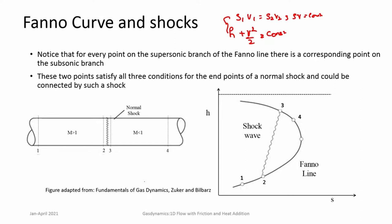You can also understand this by the fact that there are two branches in a Fanno curve. The subsonic branch (M < 1) and the corresponding supersonic branch (M > 1). One can always find two points — say points 2 and 3 — that correspond to the states across a normal shock. So if you have a duct where the inlet is supersonic and a shock occurs within the duct, that shock can be located on the Fanno curve.